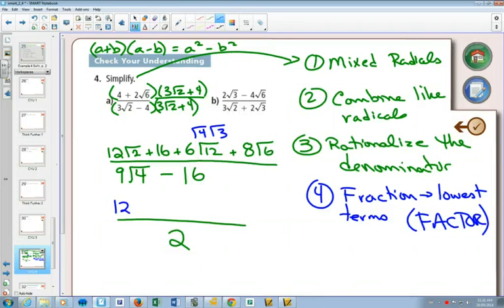I'm going to have 12 root 2 still there. I'm going to have plus 16 still there. But now, because 12 is 4 times 3, this 4 is going to change into a 2 when it comes out in front. And it's going to hit that 6. 6 times 2 is 12. And I'll still have a root 3 plus 8 root 6.